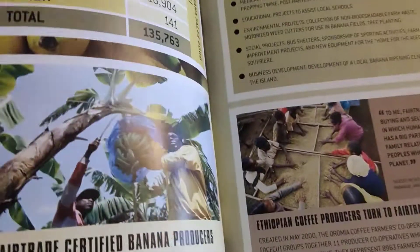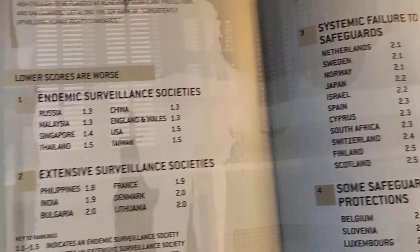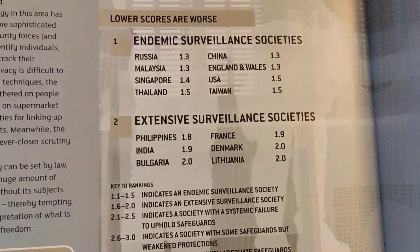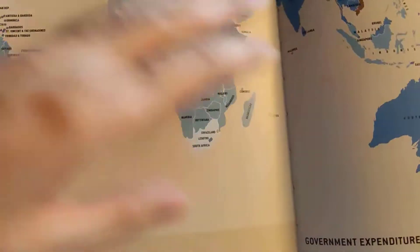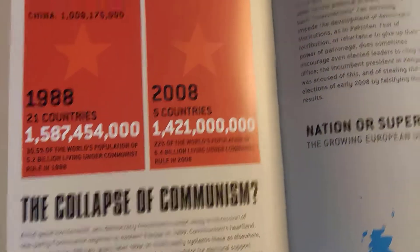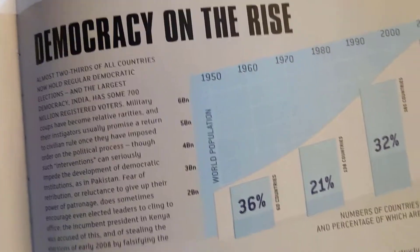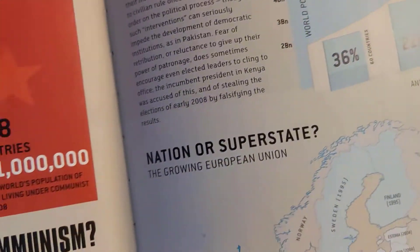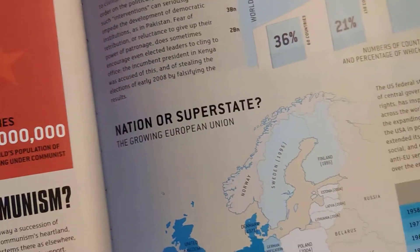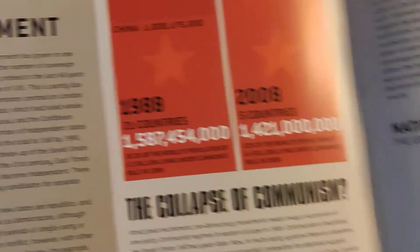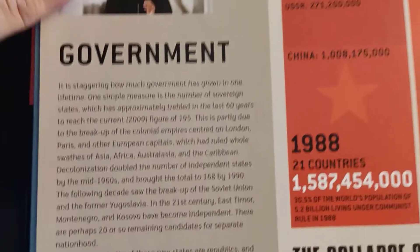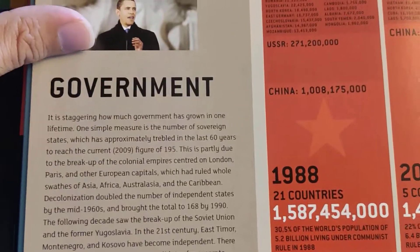This is a great book — bar charts, pie charts, and tables about the war, environment, democracy, and government.